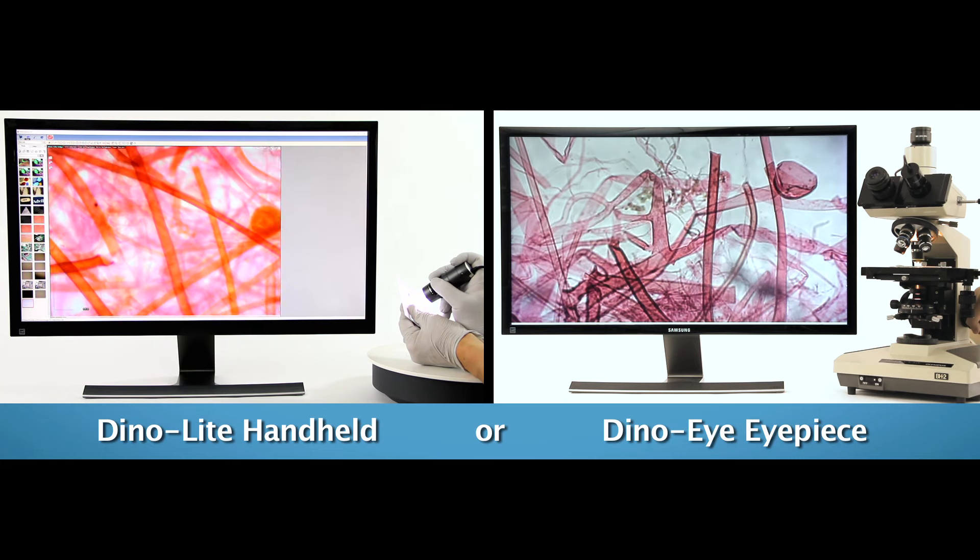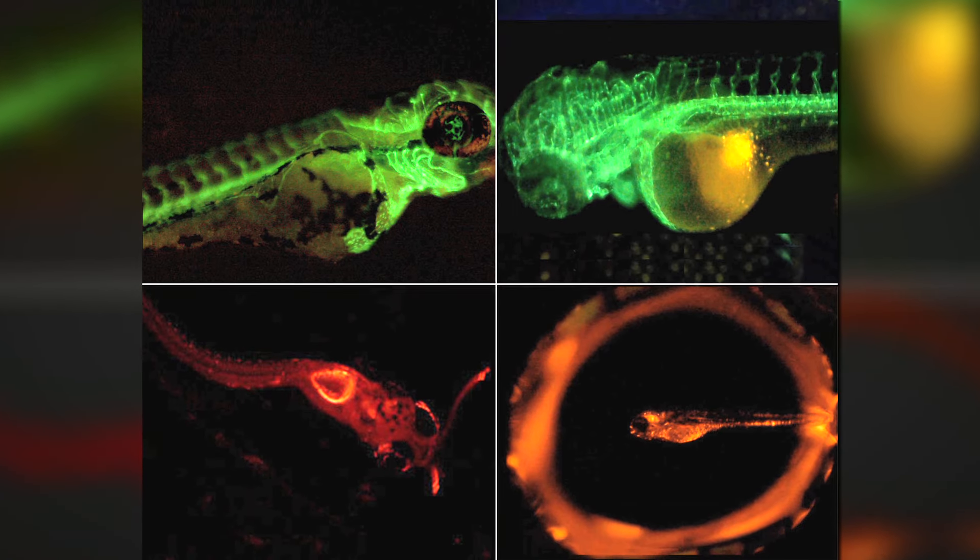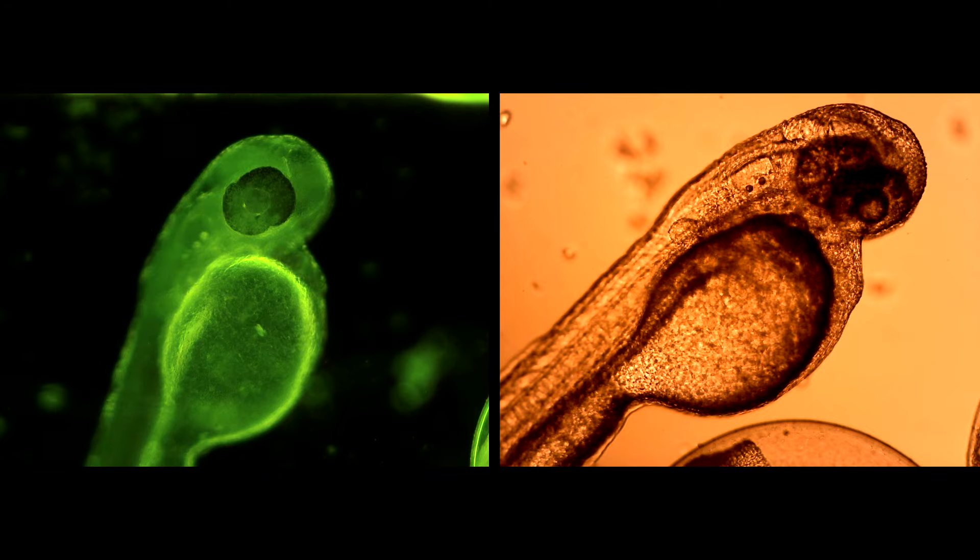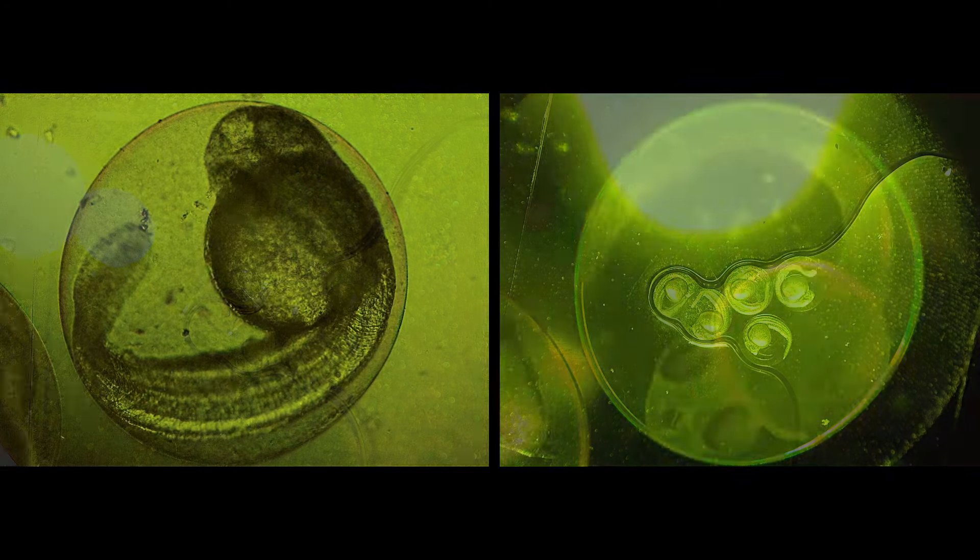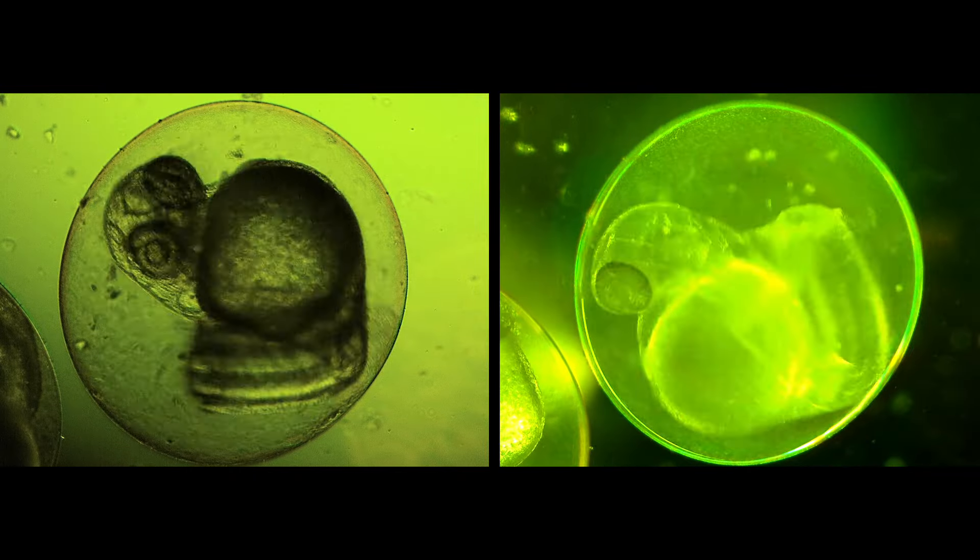Dynolite eyepiece cameras are inserted into an eyepiece slot of an existing traditional microscope. Dynolite models with specific fluorescent LEDs help provide quick, high-quality viewing options without the need for staining, offering an easy workaround for the standard seven-day waiting period involved with the staining process.